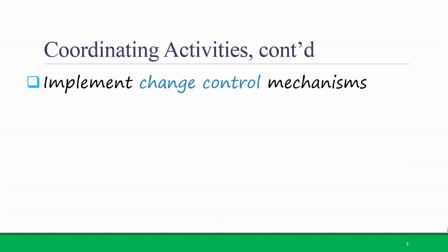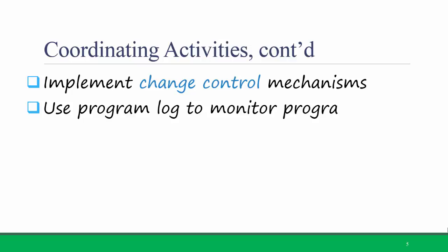Another good tip is to implement change control mechanisms. This means that if you have a large project with multiple programmers working on it, you don't want them to override each other's work, so you need to make sure that the code can be checked out and checked in by a programmer as they make edits on it. You should also use a program log to monitor program changes — being able to see who made changes, at what time they made those changes, and what those changes were. One popular tool for managing code, including change control and program logs, is GitHub.